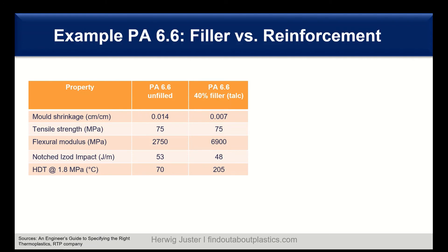Now we take the same base resin and add 30 volume percent talc as filler. We notice some improvement in mold shrinkage. The tensile strength level stays the same. However, the flexural modulus — there we see already some change; you can double it here. With the filler, the impact behavior shows a decrease. On the other hand, with the thermal properties, the HDT increases really significantly from 70 to 205 degrees C. This can already make a difference in your material selection process for thermal and mechanical properties.